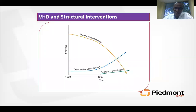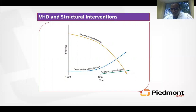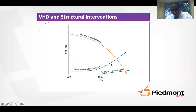The incidence of rheumatic valve disease is on the decline globally; however, this decline has not been seen in the developing world. We don't see rheumatic heart disease often in this country — it's very rare. I did my medical school in Ethiopia, so I know rheumatic heart disease is very common there. On the other hand, degenerative valve disease is on the rise in the Western world, mostly due to calcific degeneration of the valve.